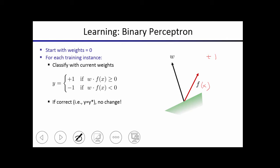But if the label corresponding to this example is actually negative one, then you adjust the weight vector by adding or subtracting the feature vector. And you add the feature vector if the correct label is plus one, and you subtract it if the correct label is minus one.